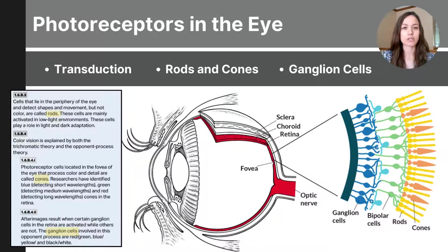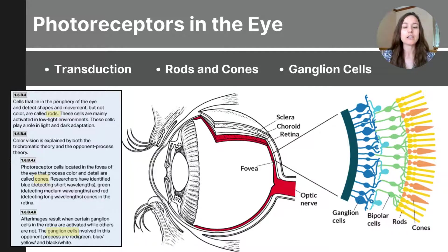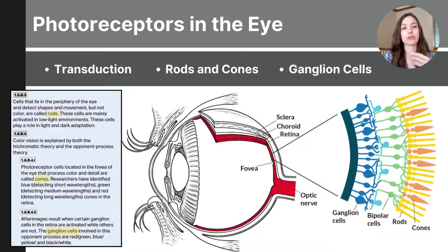Rods are not found in the fovea, but rather scattered throughout the retina. Therefore, they are essential for our peripheral vision. Rods also detect low light levels, so they are essential for our night vision — they are very light sensitive, meaning they can detect light in very low light conditions. Rods do not perceive color, but rather see in shades of gray.